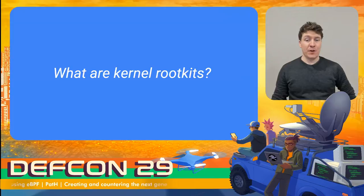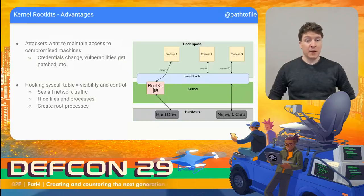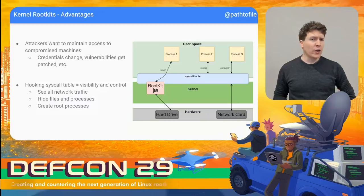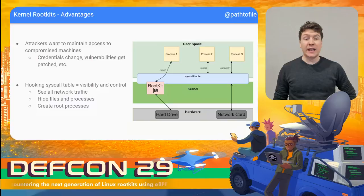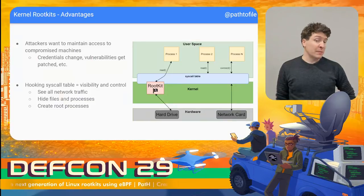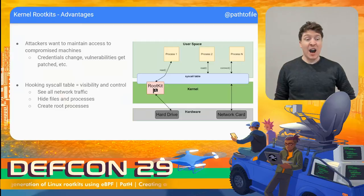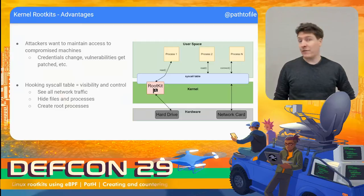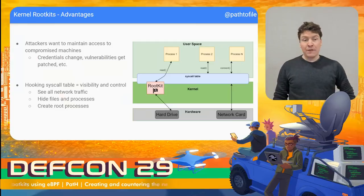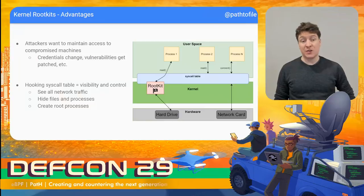What are kernel rootkits? Once an attacker compromises a machine, they're going to want to maintain that access. Perhaps they exploited a vulnerability in a web application or used some stolen credentials. These holes can be closed, and when they are, the attacker is going to want a way to regain access to that machine, preferably with root privileges, and preferably in a way that is undetectable to security systems or systems administrators. This is the role of a rootkit.